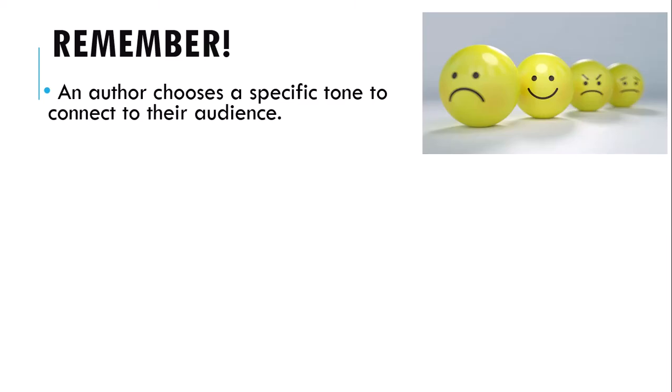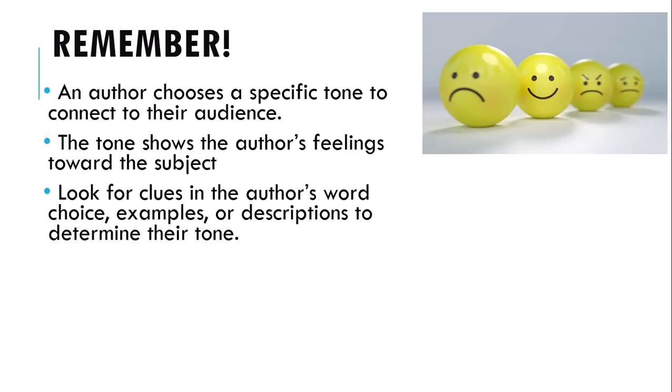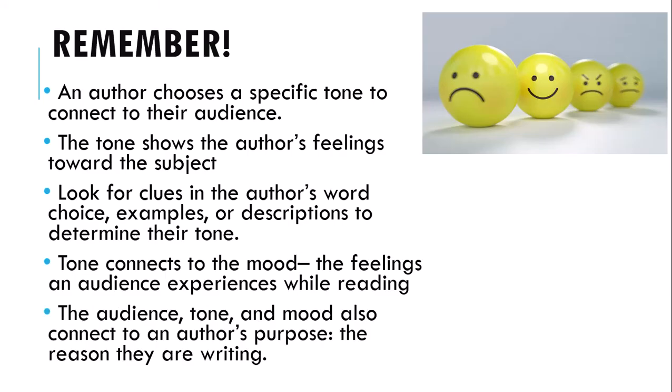Remember, an author chooses a specific tone to connect to their audience. The tone shows the author's feelings toward the subject. Look for clues in the author's word choice, examples, or descriptions to determine tone — this can also be narration if they're telling a story. Tone connects to mood, the feelings an audience experiences while reading, which could match what the author feels or be a little different. Tone and mood also connect to the author's purpose, why they are writing — they have a plan, they want the audience to receive their message, and they do that by using a specific tone.